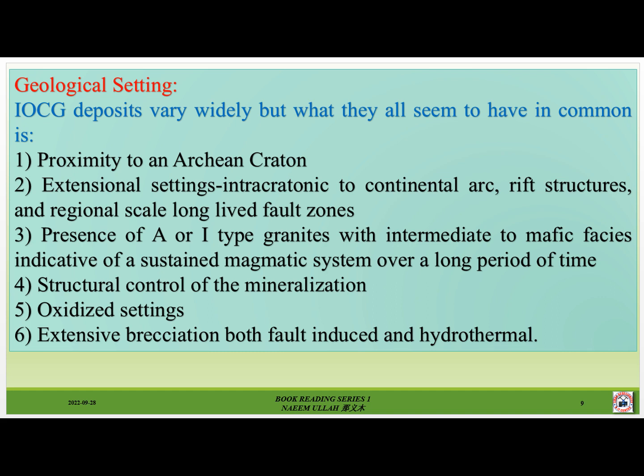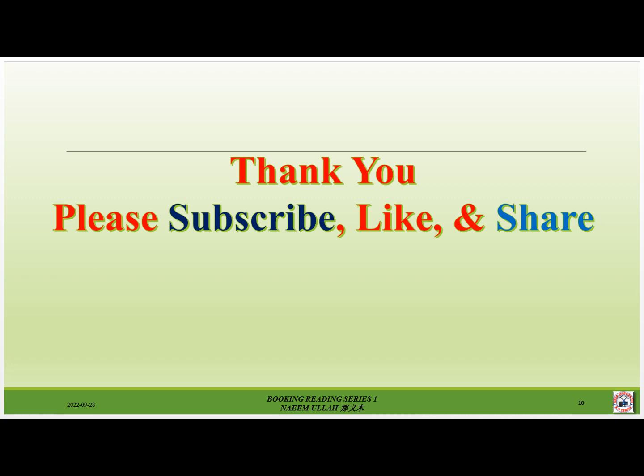IOCG deposits vary widely in geological setting, but what they all seem to have in common is: number one, proximity to an Archean craton; number two, extensional settings including intracratonic to continental arc rift structures at the regional scale; number three, long-lived fault zones and presence of A- or I-type granites with intermediate to mafic phases indicative of a sustained magmatic system over a long period of time; number four, structural control of the mineralization; number five, oxidized settings; and number six, extensive alteration both fault-induced and hydrothermal.